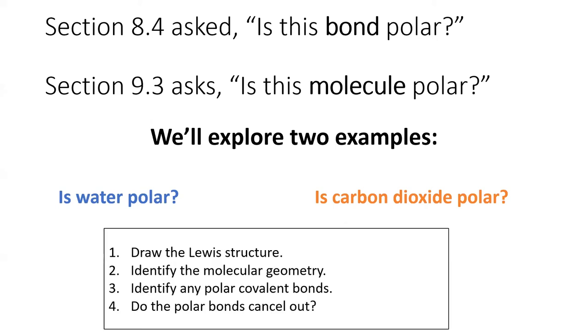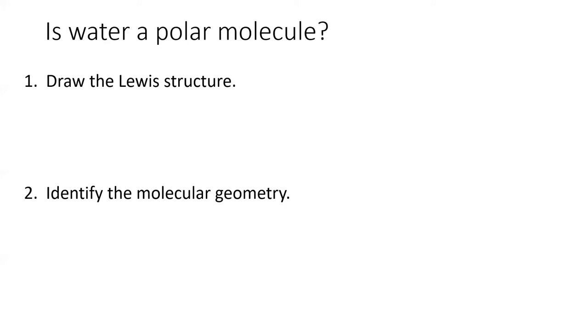There are four general steps we will follow for each example, starting with turning the Lewis structure into a 3D shape, then determining whether any polar covalent bonds cancel out or add together. In order to determine molecular polarity, you need to be a master of the Lewis structures. Since the first step will always be draw a Lewis structure.